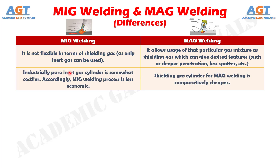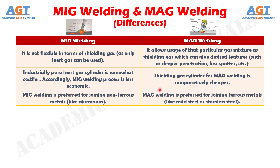Number six: industrially pure inert gas cylinders are somewhat costlier. Accordingly, the MIG welding process is less economic. Whereas, the shielding gas cylinder for MAG welding is comparatively cheaper. And difference number seven: MIG welding is preferred for joining non-ferrous metals like aluminum, whereas MAG welding is preferred for joining ferrous metals like mild steel or stainless steel.